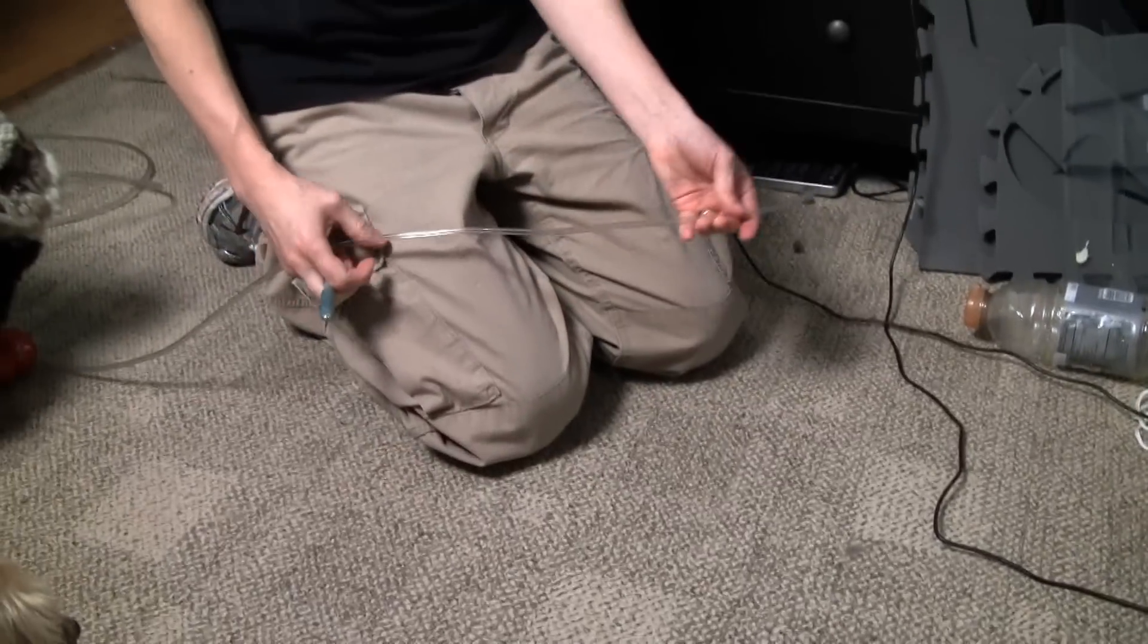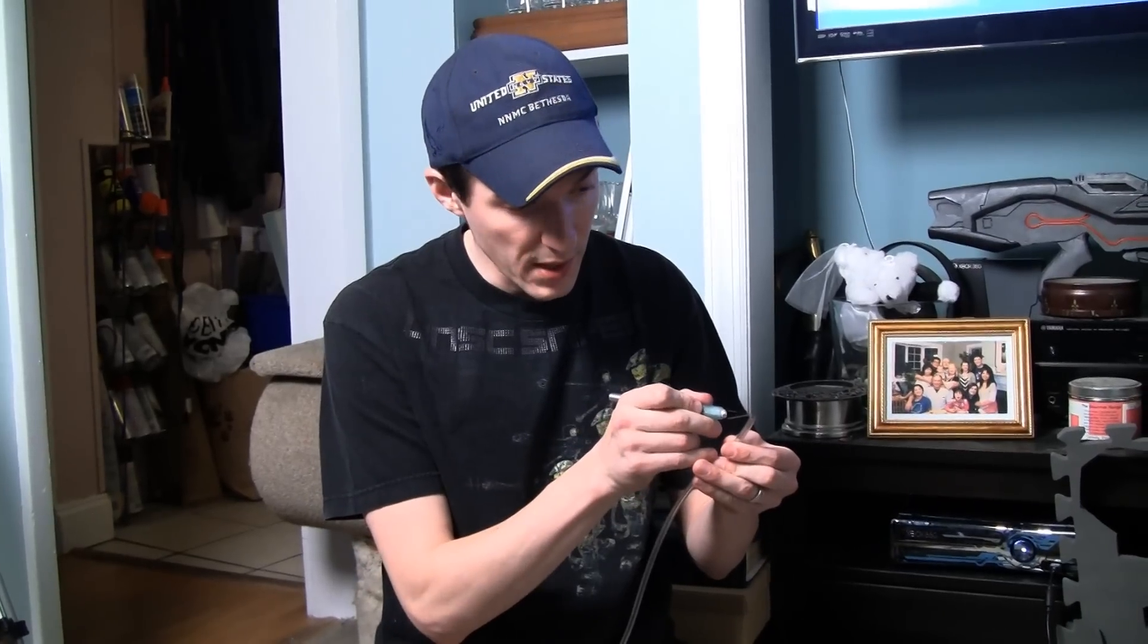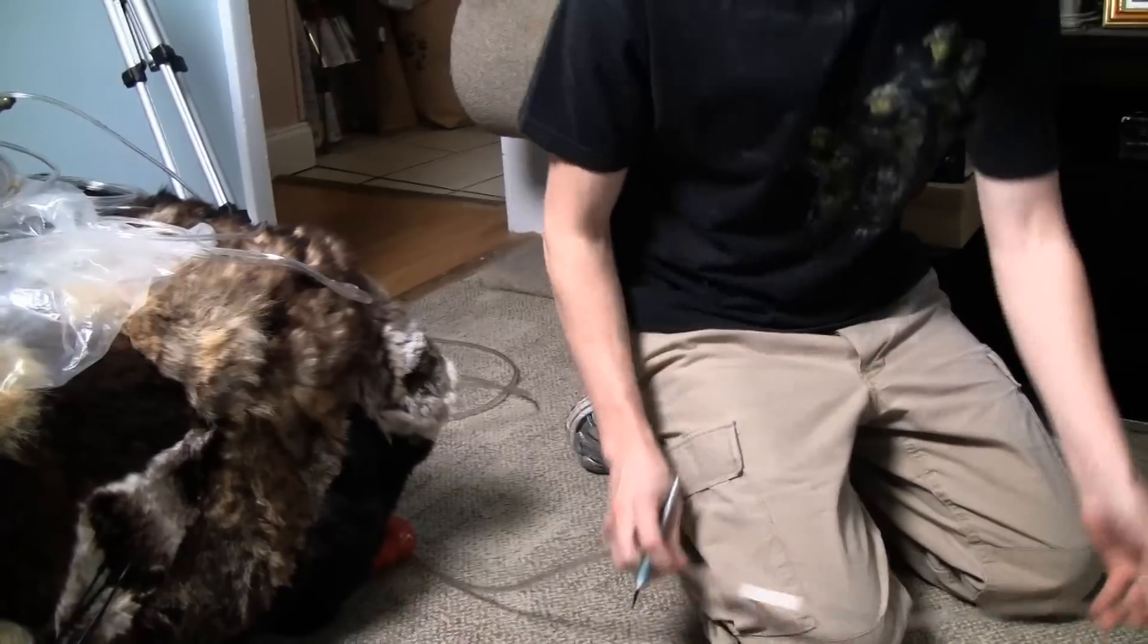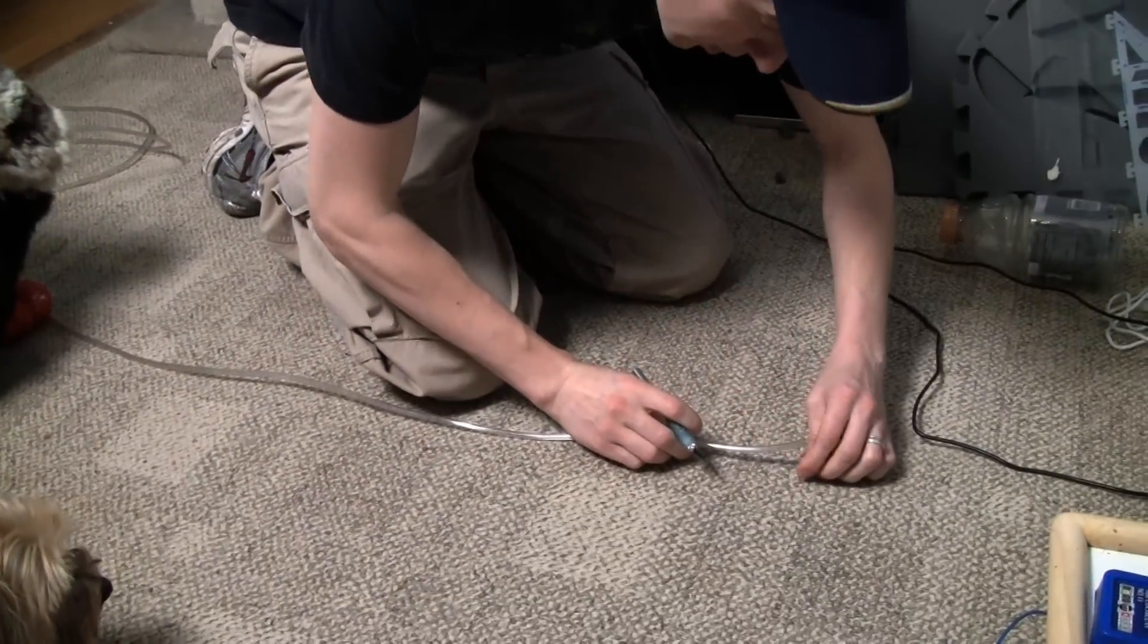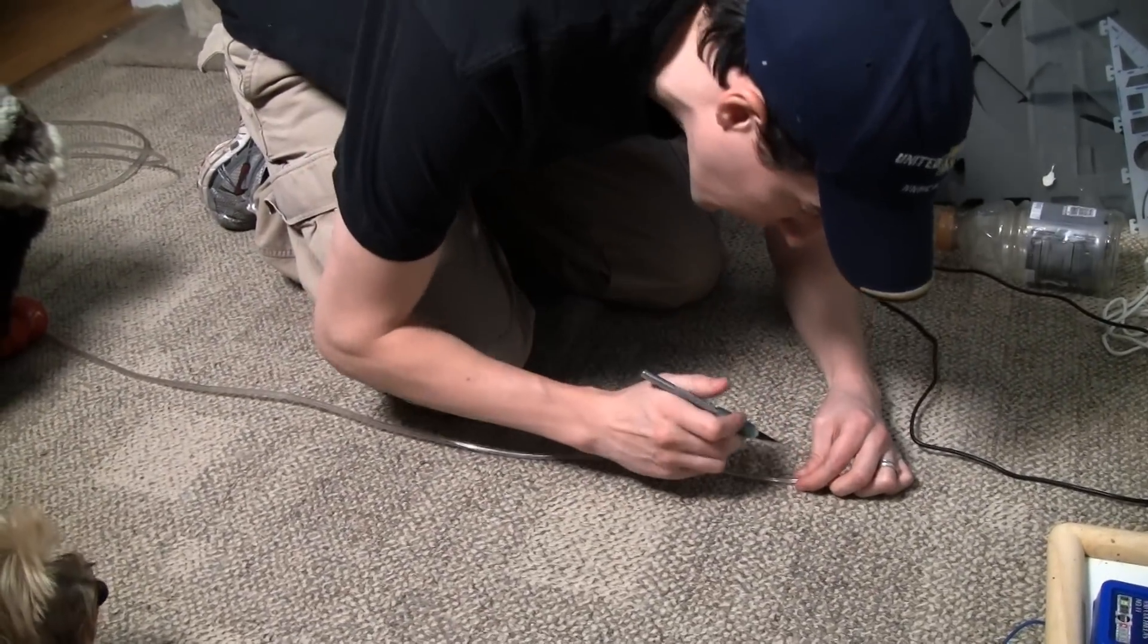Right now I have myself 9 feet worth of medical tubing. You can get it from a medical supply store or you can get it from Lowe's or Home Depot. They actually sell it for fish tanks and stuff like that. But yeah, so all you need to do is just take a sharp X-Acto knife, fresh blade, and just slice it just down the middle all the way through. So, let's see how long it takes for 9 feet worth of tubing to get cut.